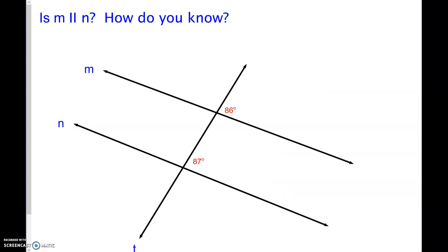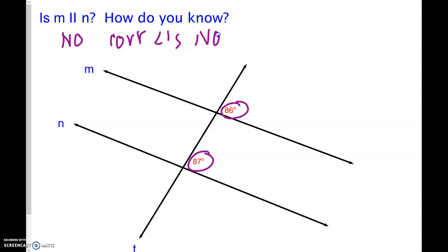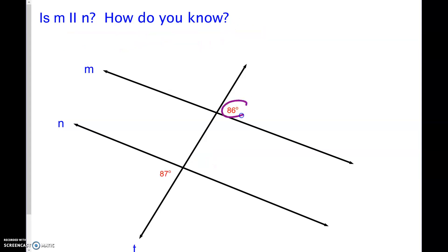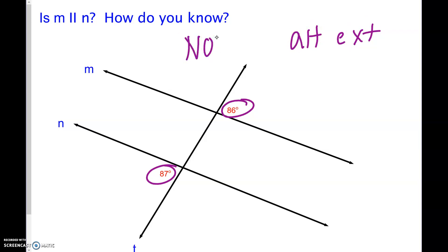Can we conclude that M is parallel to N? We have corresponding angles and they are not congruent, so is M parallel to N? No. Corresponding angles are not congruent, so we can conclude that they are not parallel. Are they parallel here? We have alternate exterior angles — are they parallel? No. Alternate exterior angles are not congruent, and because those are not congruent, those two lines cannot be parallel.